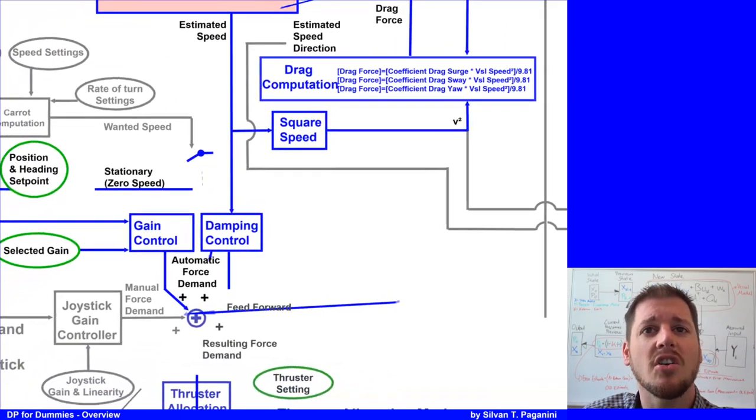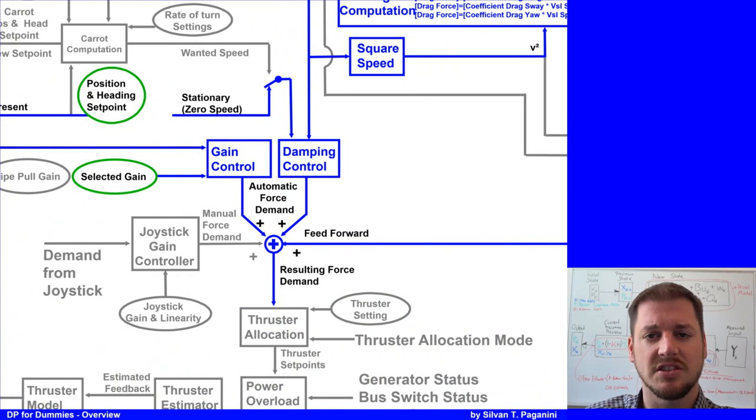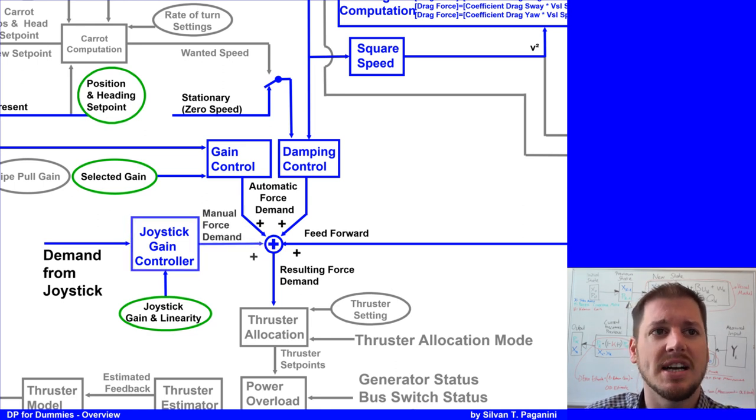In summary, we have all the resulting forces to be produced by the thrusters for the vessel to remain stationary. That's first the feed forward consisting from the wind force and the automatic demand which is the gain and the damping control. And optional, third, the manual control which is the joystick. When any of the axes are not under automatic control, you can use the joystick to manually control the force applied by the thrusters in those axes.